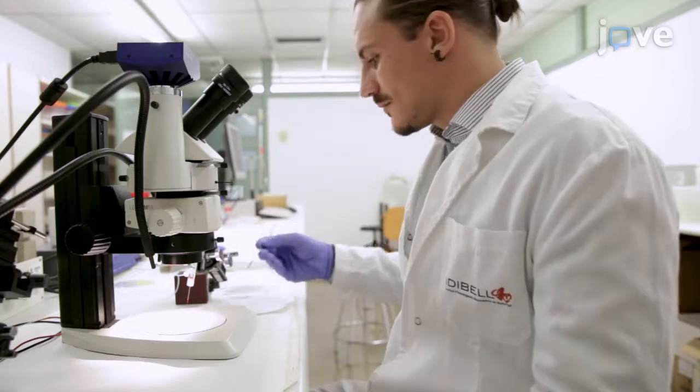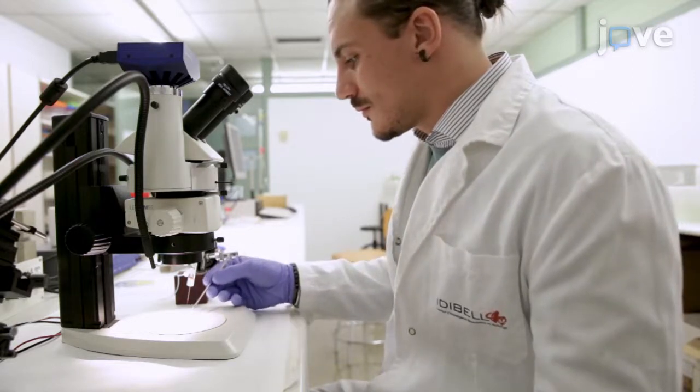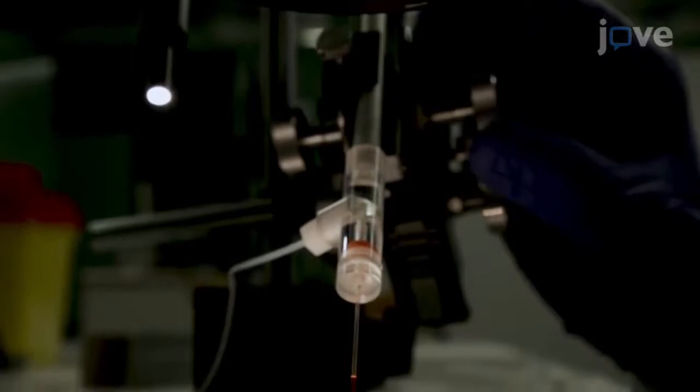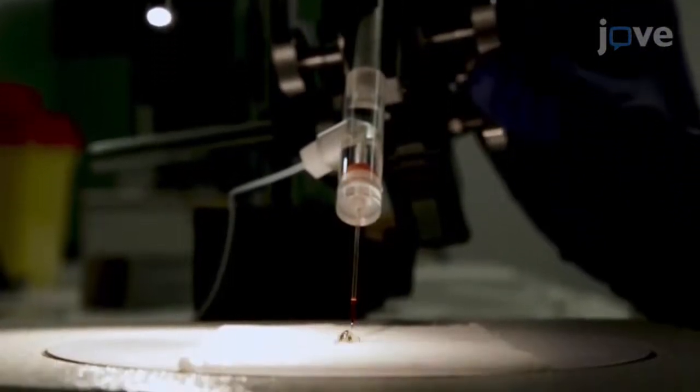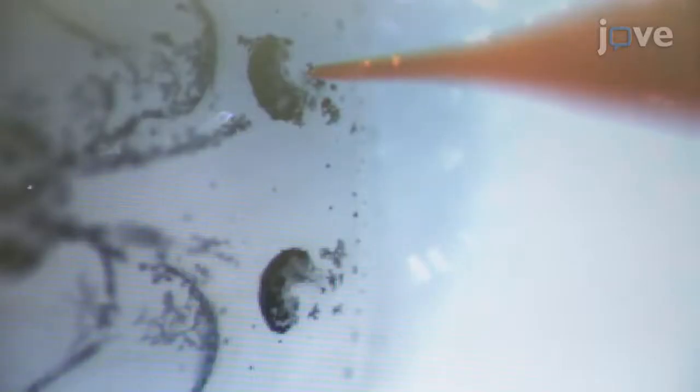Place an anesthetized tadpole under the dissecting microscope on filter paper. Then move the tip of the pipette into the principal cavity of the nasal capsule and deliver 0.15 to 0.3 microliters of solution.